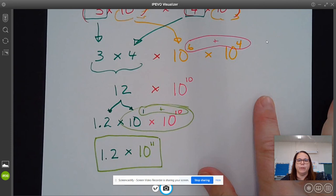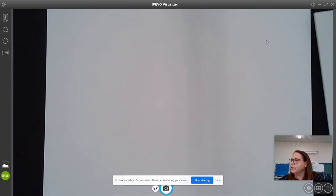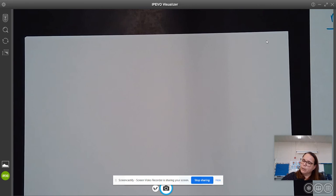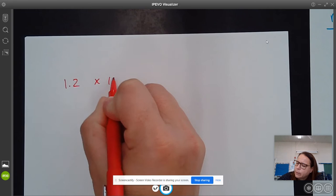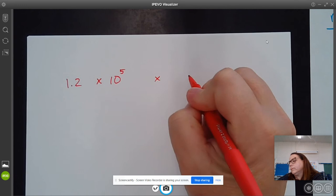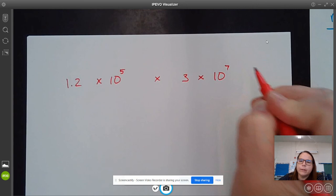All right? So let's go over one more example of multiplying numbers in scientific notation. So let's see, what if we had 1.2 times 10 to the 5th times 3 times 10 to the 7th. So we have these two numbers in scientific notation.